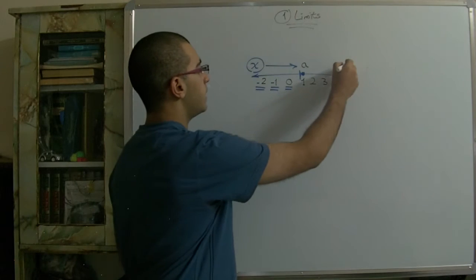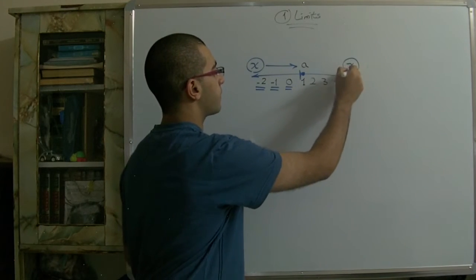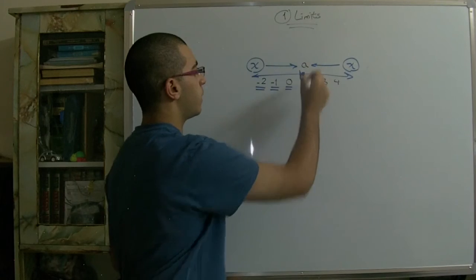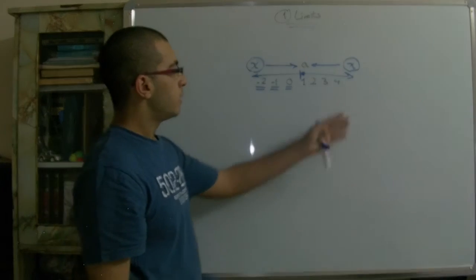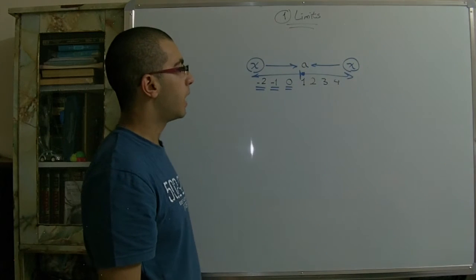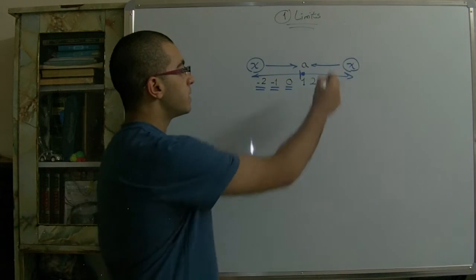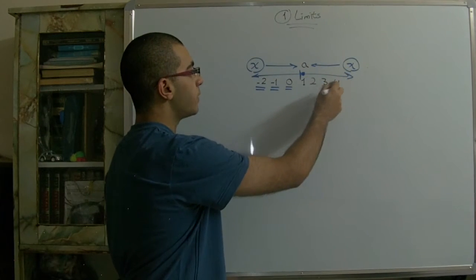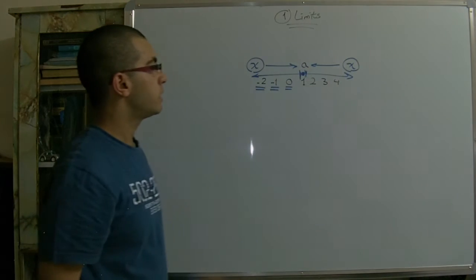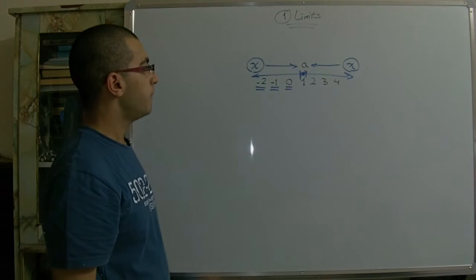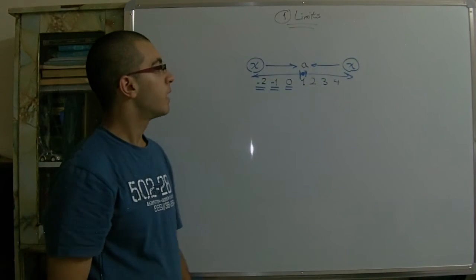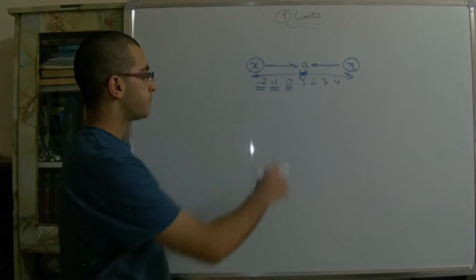On the other hand, if we have x on the right side of the number line also approaching A, its value is decreasing gradually until it reaches the nearest point to A but is not actually equal to A. So this is the meaning of the limit.